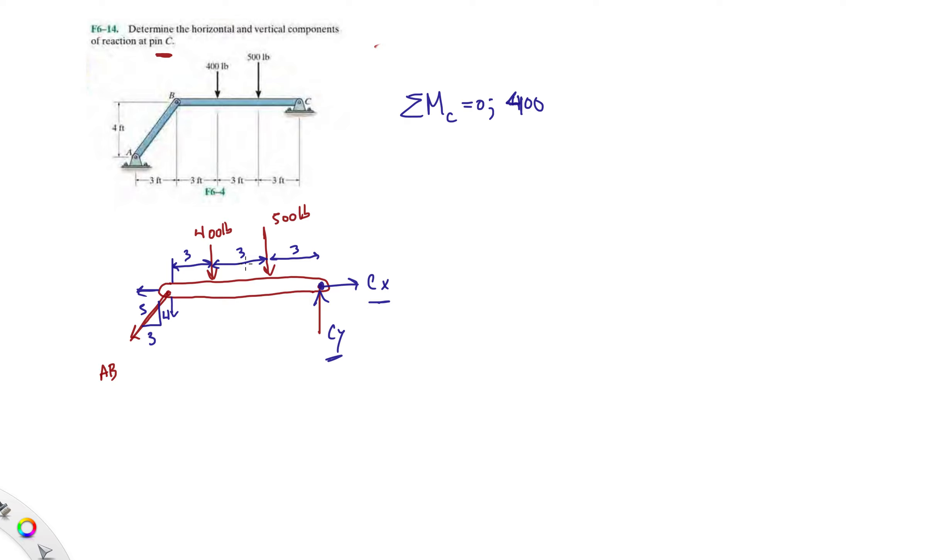We have the 400 pound force, so 400 times 6, plus 500 times 3, and then we have AB. ABX's line of action will cross C so we only care about the Y component, ABY. That'll be plus ABY, but ABY is going to be AB times four-fifths using that special right triangle, times the distance of nine.